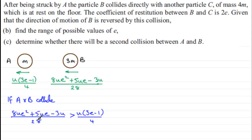Now what I'd want to do is get rid of these fractions next and I'd multiply both sides by 28. So if we do that, we're just going to be left with 8u e squared plus 5u e minus 3u.